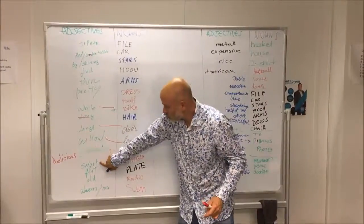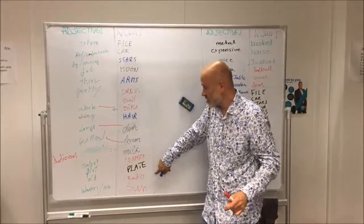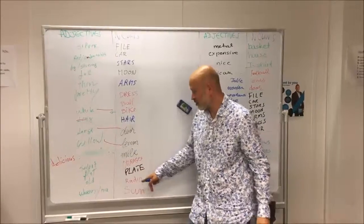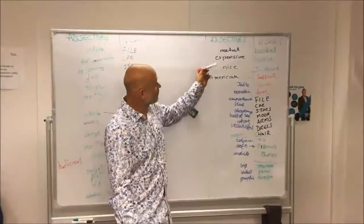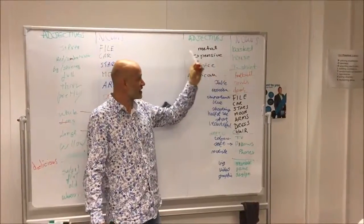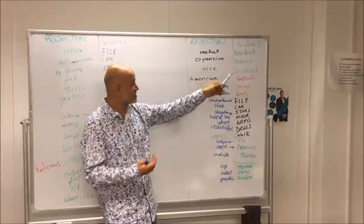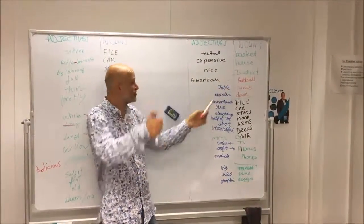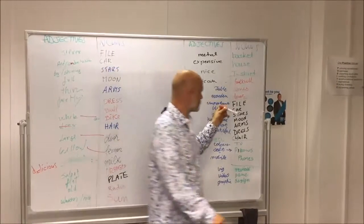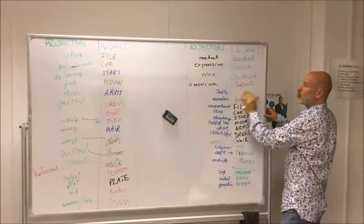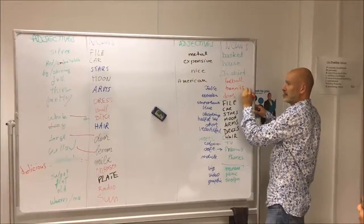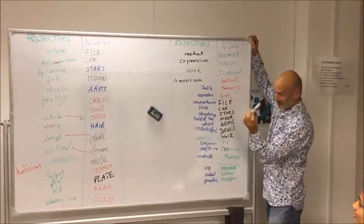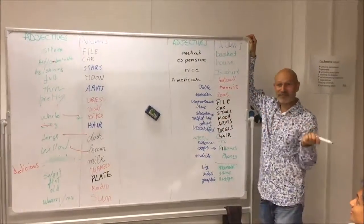Sweet oranges, flat plate, old radio, warm, nice sun - these are fantastic. Over here we have metal basket, expensive house, nice t-shirt, American football - who did that, that's great. Table tennis, now tennis is actually spelled double N, table tennis like that. Wooden door, I like that wooden door. Important file, that's a brilliant one.